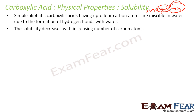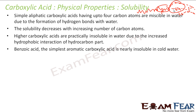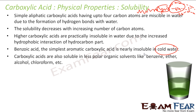Solubility decreases with increase in the number of carbon atoms, because if we increase the carbon chain, the small hydrophilic part cannot take care of the remaining hydrophobic part. For the acid to be soluble, it has to form a hydrogen bond with water. Higher carboxylic acids are only partially soluble in water because the hydrophobic part is larger. Benzoic acid, the simplest aromatic carboxylic acid, is not much soluble in cold water but is soluble in hot water. Carboxylic acids are also soluble in less polar organic solvents like benzene, ether, alcohol, and chloroform.